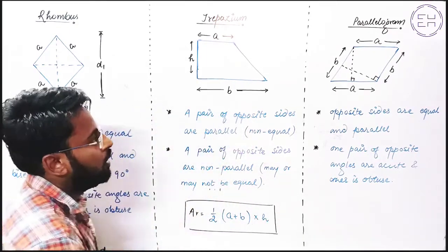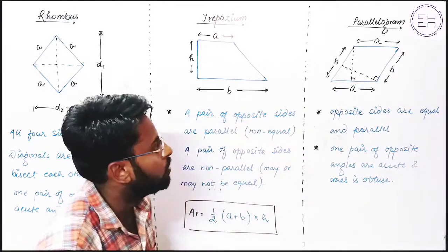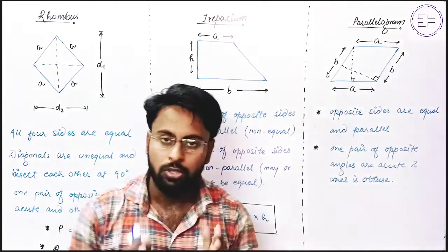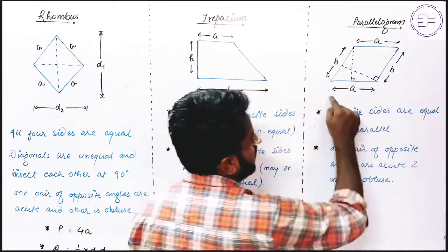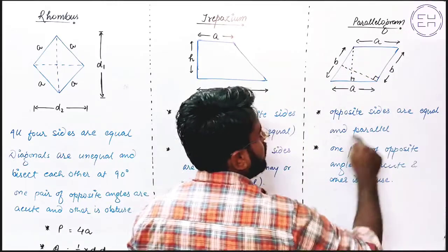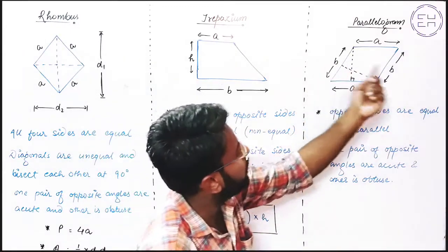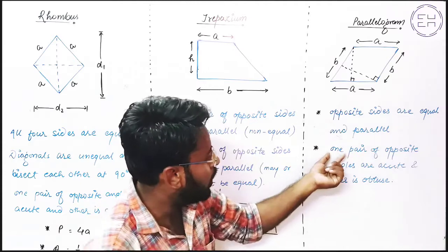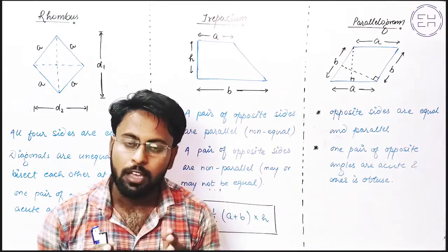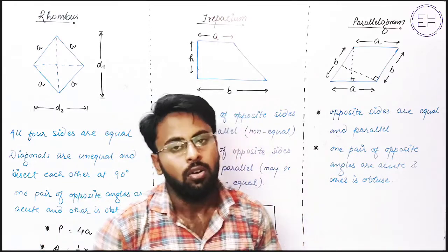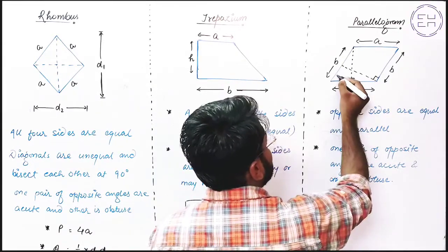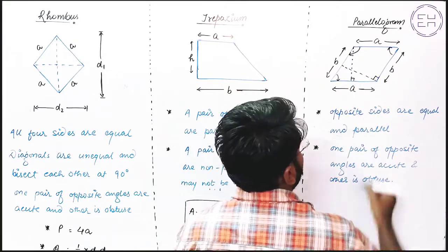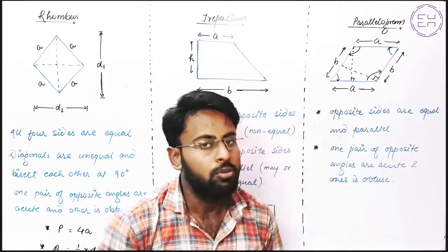Next, let us move forward and talk about Parallelogram. The properties of Parallelogram have been listed. First: opposite sides are equal and parallel. So we denote one pair as A and A, and the other pair as B and B — both pairs are equal and parallel. Now talking about angles: one pair of opposite angles are acute and the other is obtuse. This angle is acute for one pair, and the other pair gives obtuse angles.